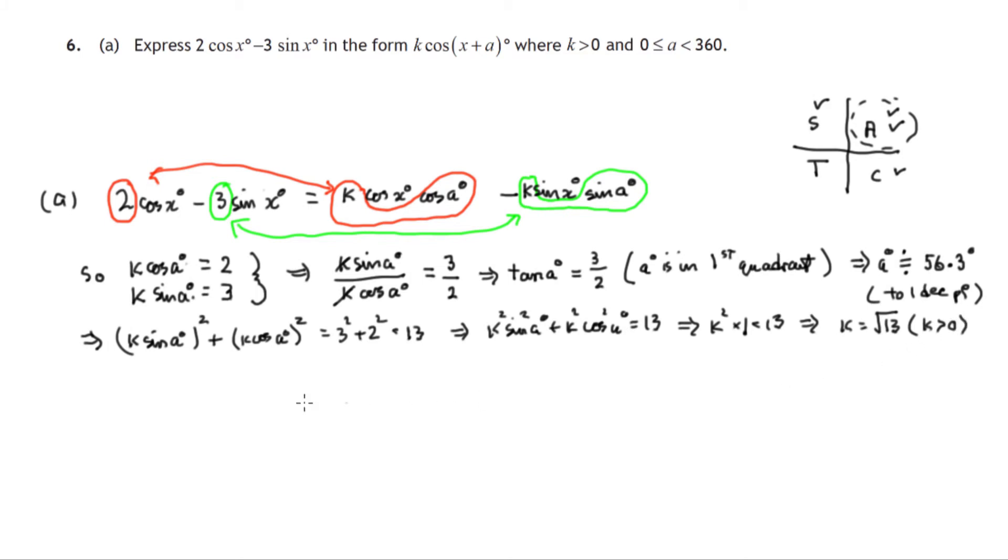We don't include negative root 13 because k, we're told, is positive. So we have to express 2 cos x minus 3 sin x in the form k cos(x + a). We now know k is root 13 and a is 56.3. And the accuracy is to one decimal place. So that's us completed part A.